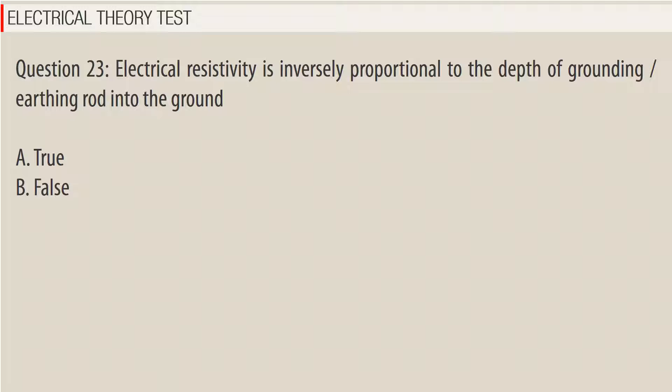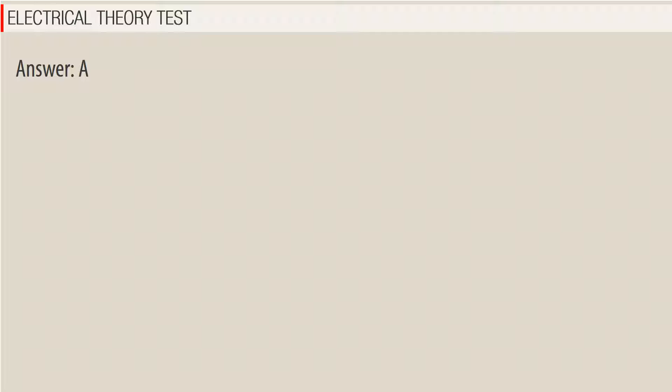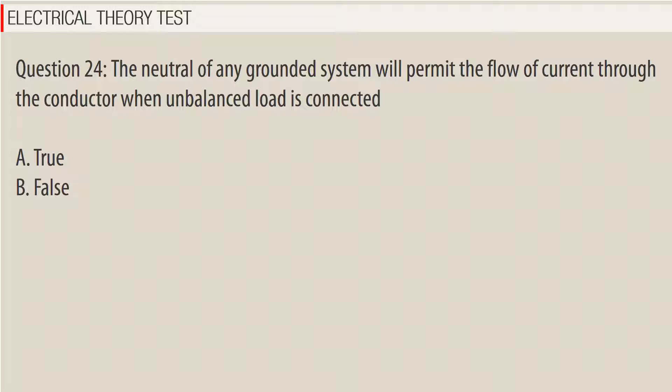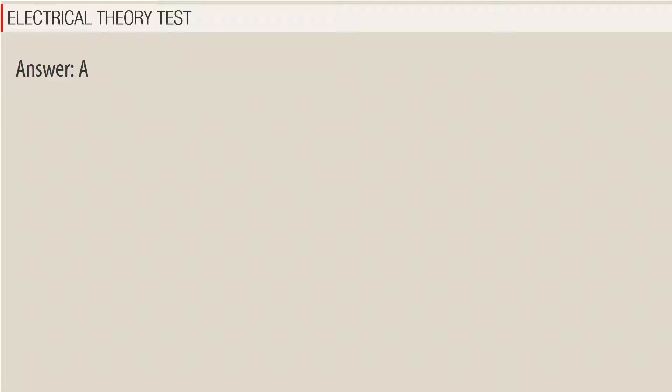Question 24: The neutral of any grounded system will permit the flow of current through the ground conductor when an unbalanced load is connected. A. True, B. False. Answer: A.